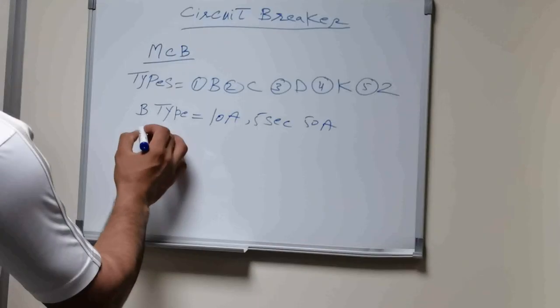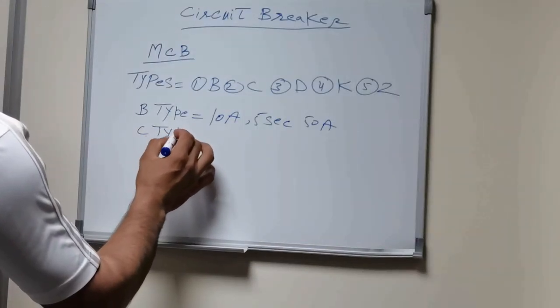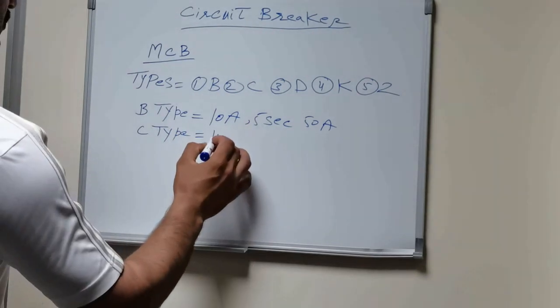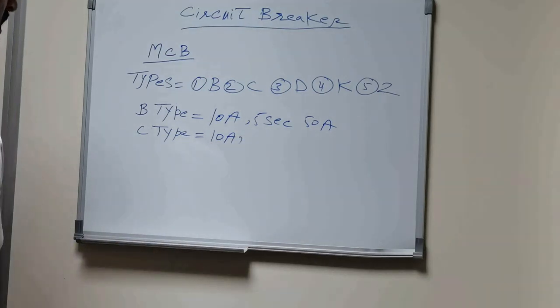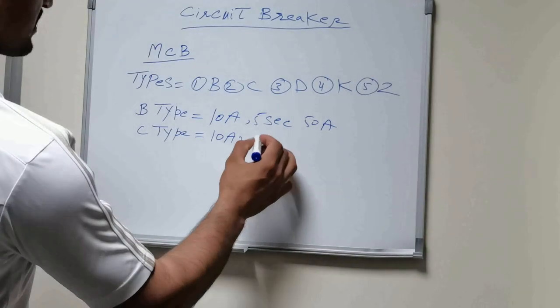Same like Type C. If we use 10 amps Type C circuit breaker, it means this Circuit Breaker can withstand up to 100 amps for 5 seconds.